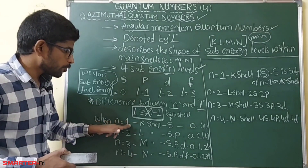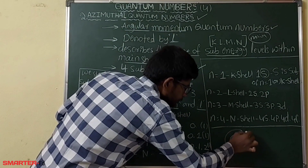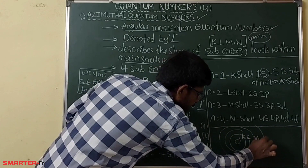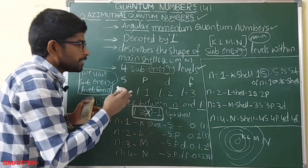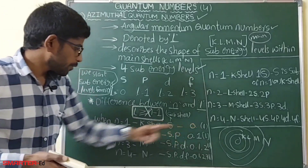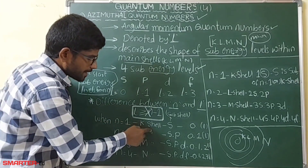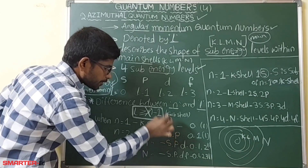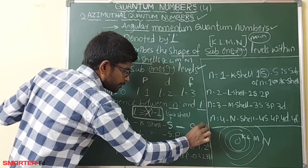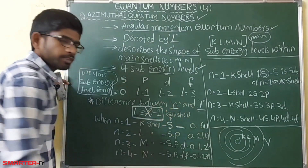When n equals 1, that is the K shell, and it has one sub-shell — the s sub-shell. The value of l for s is 0. When n equals 2, that is the L shell, and it has two sub-shells: s and p, with l values 0 and 1.